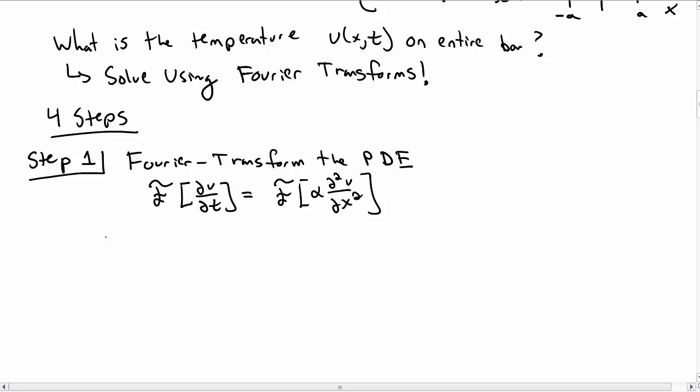In order to make any progress on this we need to use the properties of the Fourier transform itself to simplify our expression for the partial differential equation. So time derivatives come out of the Fourier transform, so this is du hat dt and that's equal to minus alpha p squared u hat of p comma t.